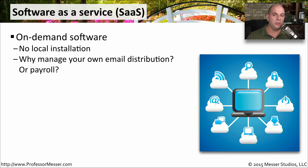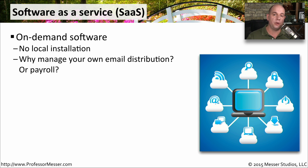That way, as your email newsletters get more popular and you need to scale up, you're going to use the resources available at that third party. Another example is payroll. It has to work every week, or every two weeks, or every month. And instead of having your own software that you have to manage and maintain, you'll use a third party Software as a Service to handle all your payroll in the cloud.